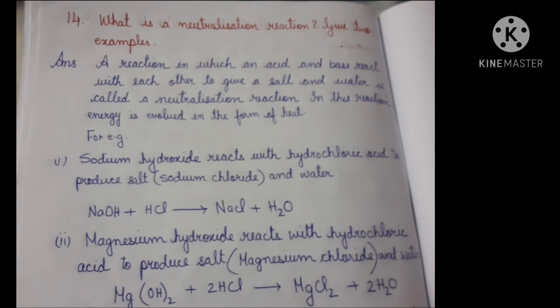Question 14: What is a neutralization reaction? Give two examples. A reaction in which an acid and a base react to give salt and water is called a neutralization reaction; energy is evolved as heat. Example 1: NaOH + HCl → NaCl + H₂O. Example 2: Mg(OH)₂ + 2HCl → MgCl₂ + 2H₂O.